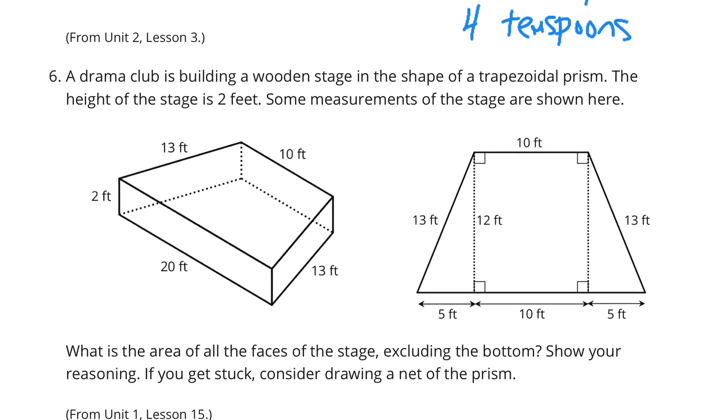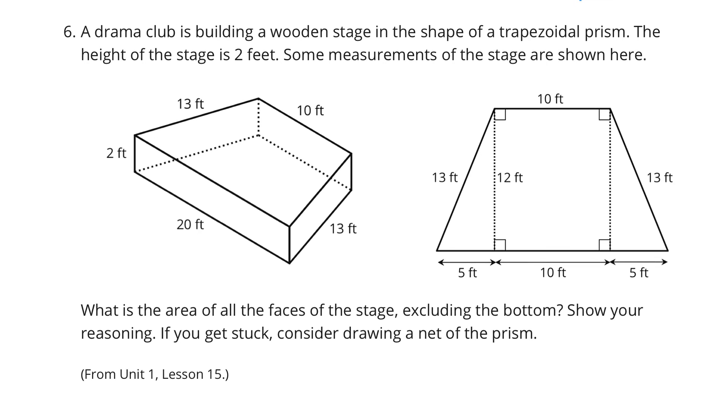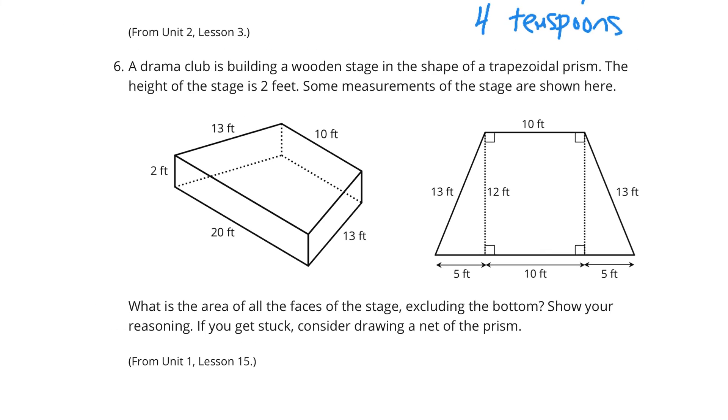Question 6. A drama club is building a wooden stage in the shape of a trapezoidal prism. The height of the stage is 2 feet. Some measurements are shown here for the stage. What is the area of all faces of the stage, excluding the bottom? Show your reasoning. If you get stuck, consider drawing a net of the prism.